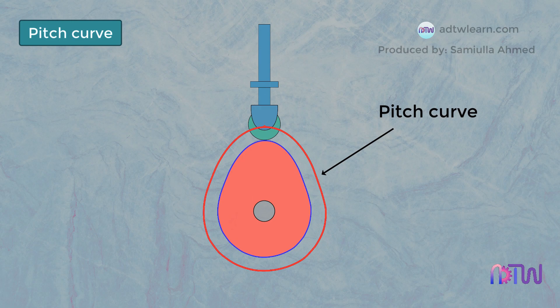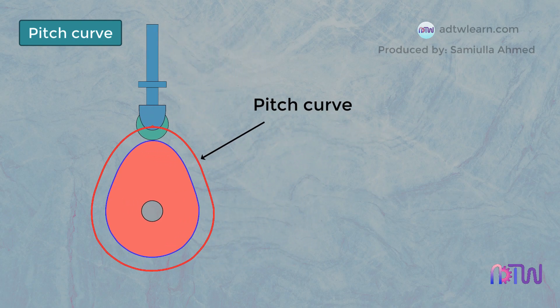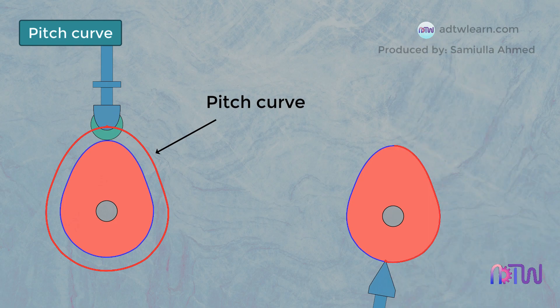In the case of the roller follower, the pitch curve is away from the cam profile at a distance equal to the radius of the roller. For a knife edge follower, the pitch curve is the same as the profile of the cam.